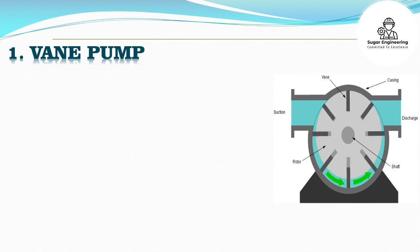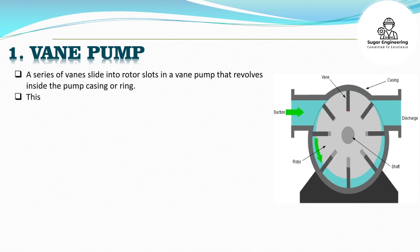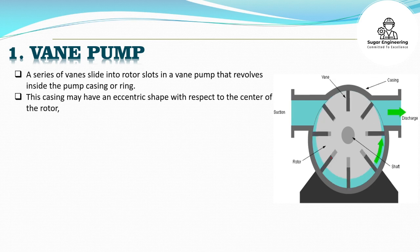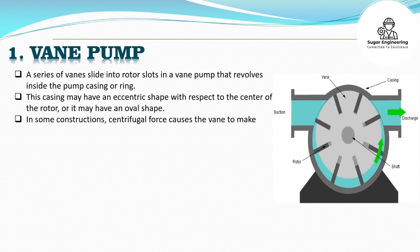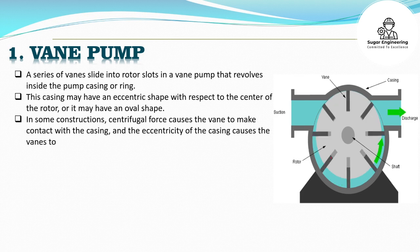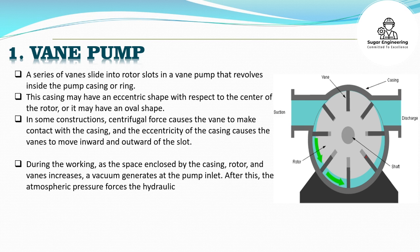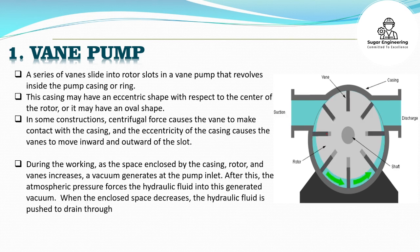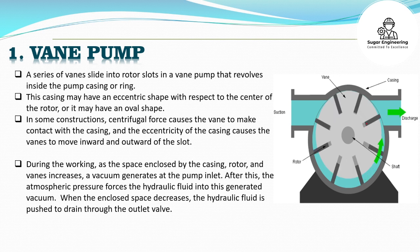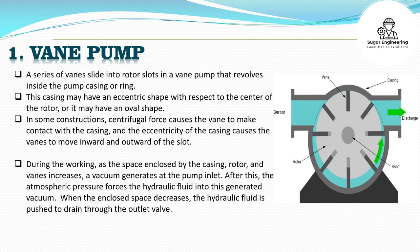In a vane pump, a series of vanes slide into rotor slots that revolve inside the pump casing or ring. This casing may have an eccentric shape with respect to the center of the rotor, or it may have an oval shape. In some constructions, centrifugal force causes the vane to make contact with the casing, and the eccentricity of the casing causes the vanes to move inward and outward of the slot. During working, as the space enclosed by the casing, rotor, and vanes increases, a vacuum generates at the pump inlet. The atmospheric pressure then forces the hydraulic fluid into this generated vacuum. When the enclosed space decreases, the hydraulic fluid is pushed to drain through the outlet valve.